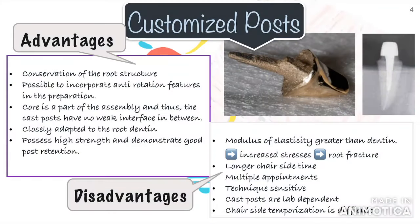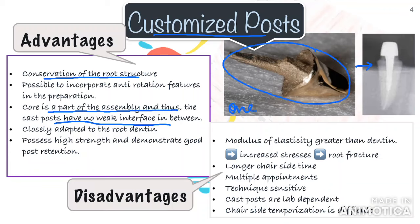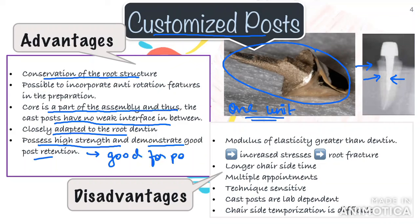First we will look at customized posts. As the name suggests, these posts are custom fabricated to fit the root canal anatomy. The advantages are: it conserves the root structure as it does not require removal of additional root dentine, unlike prefabricated posts. The core is part of the assembly, so there is no weak interface between them — the fact that post and core are one piece ensures the core cannot break away from the post. Customized posts are also closely adapted to the root dentine even in wide canals, and have high strength, working well in posteriors under heavy masticatory forces.